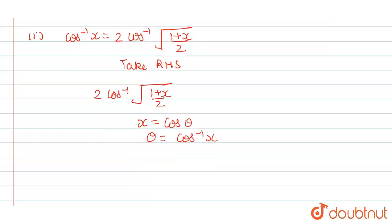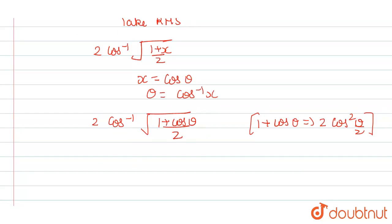So now we will put our values into our equation. So it will become 2 cos inverse of 1 plus cos theta divided by 2. And we know that we have an identity of 1 plus cos theta, which is equal to 2 cos square theta by 2. We have this trigonometric formula. So we will use this formula into our equation.